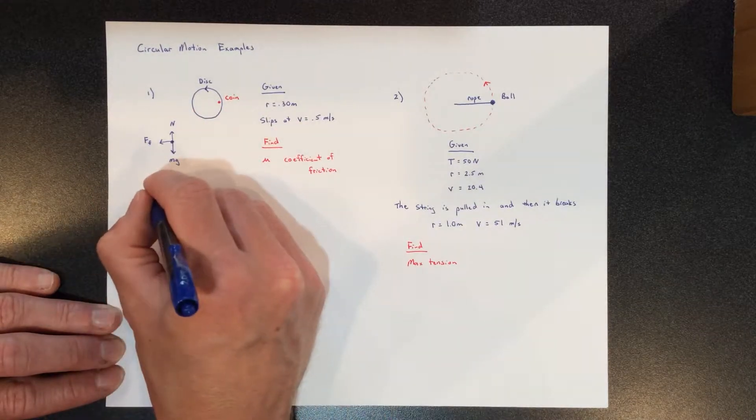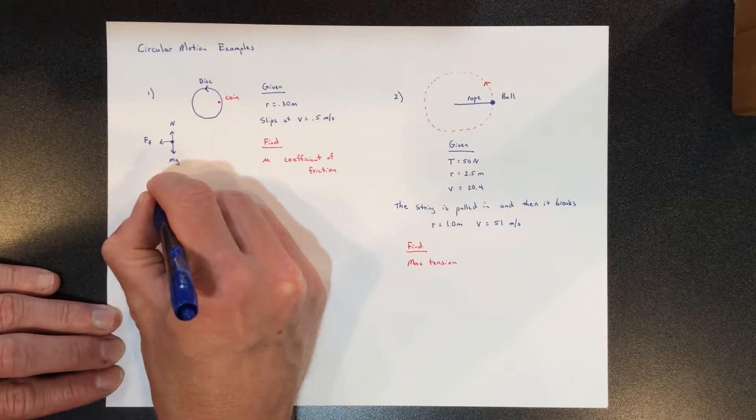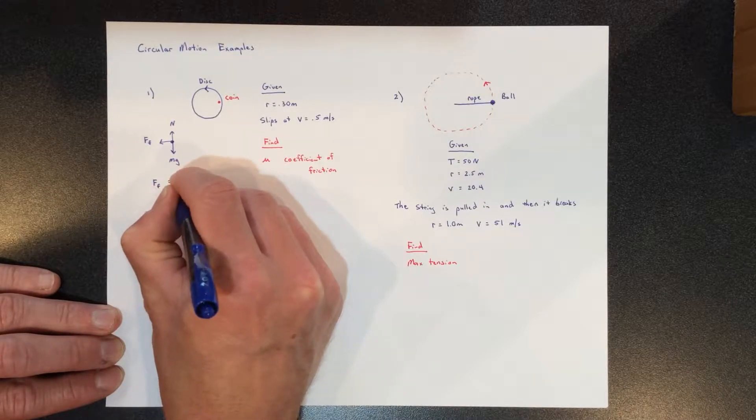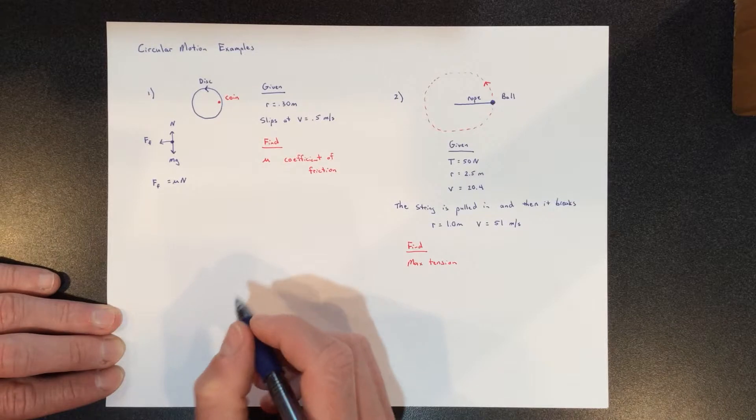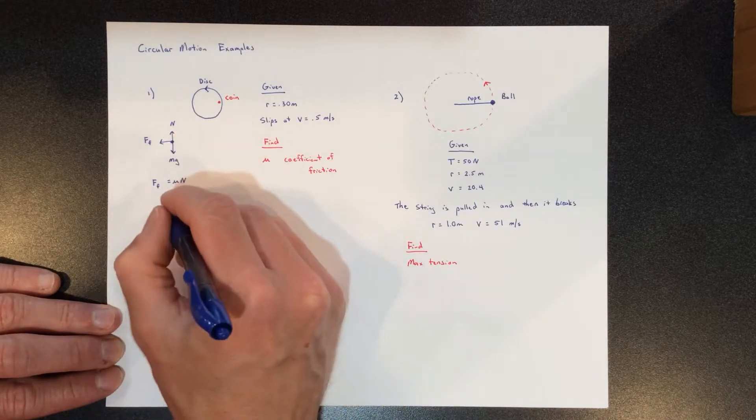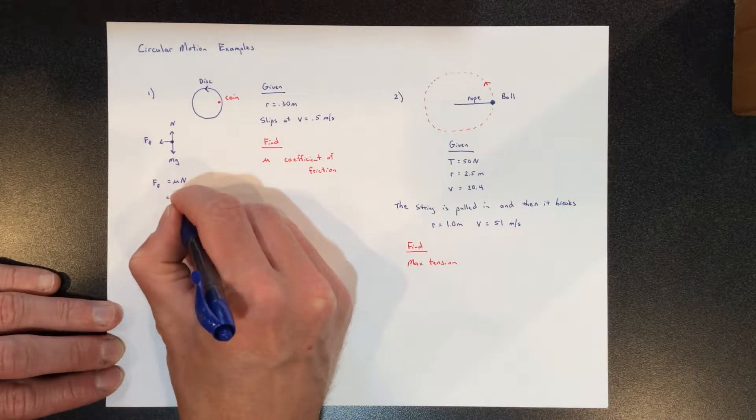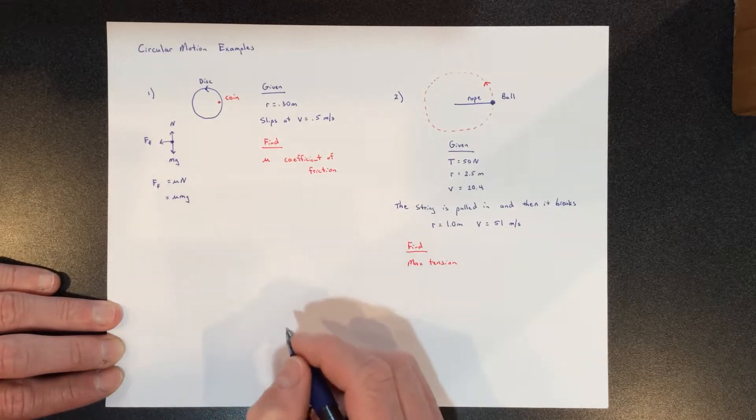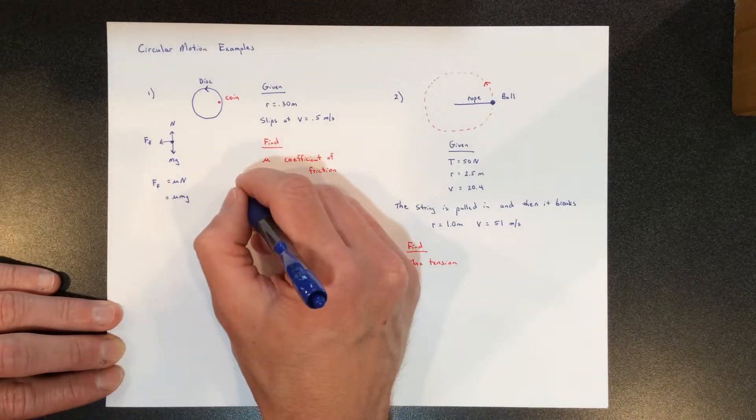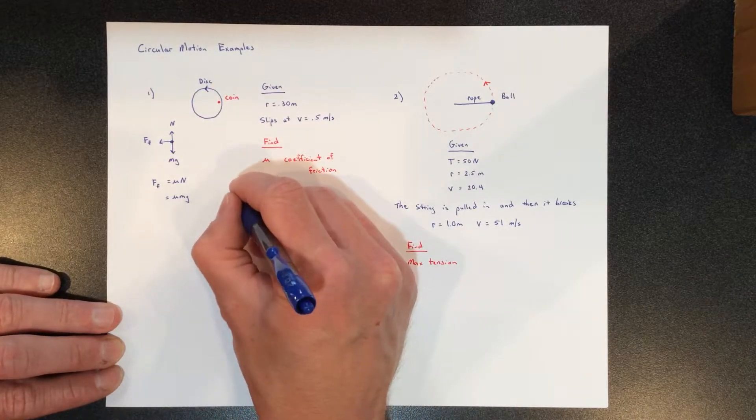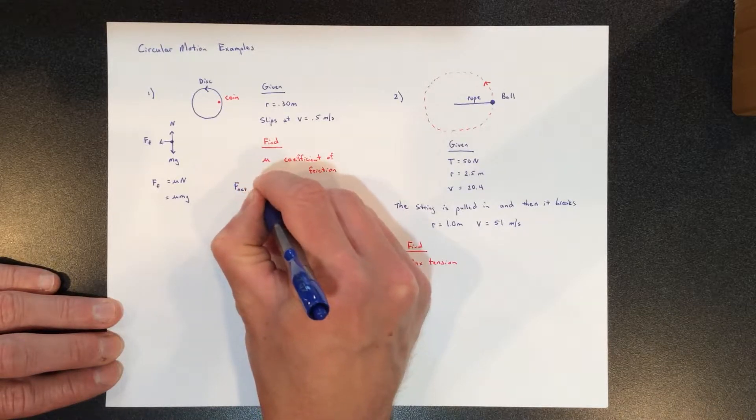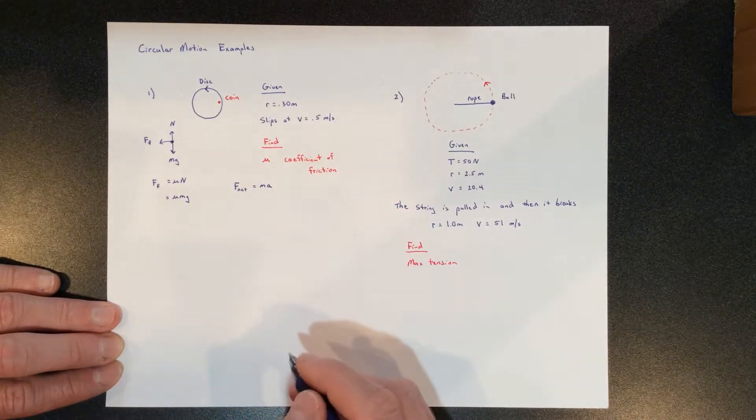We know that the force of friction is equal to mu times the normal force. We also know that in this particular case, the normal force is equal to mg, so what we have here is we're going to look at this coin's motion and say that the net force equals ma, following Newton's second law.